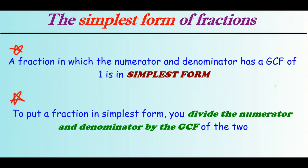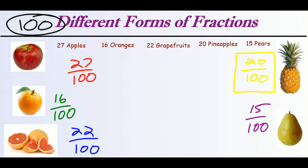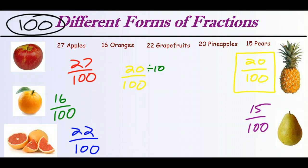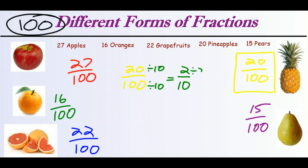Now let's go back to that example where we had the different fractions of the fruit in the basket and look specifically at 20 and 100. We want to find an easier way of representing the 20 out of 100 pineapples. If we don't immediately find an obvious GCF, we can just notice some things these fractions have in common. 20 and 100 both have a 0 at the end, so they're both divisible by 10. If we divide numerator and denominator both by 10, we end up with 2 tenths. And 2 and 10 share a factor of 2, so we can divide both by 2 and get 1 fifth.